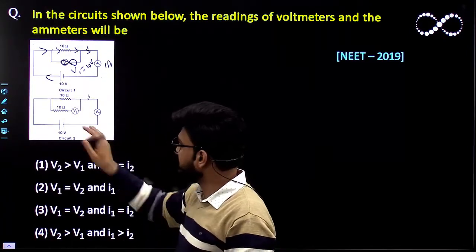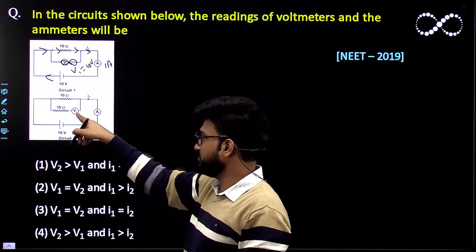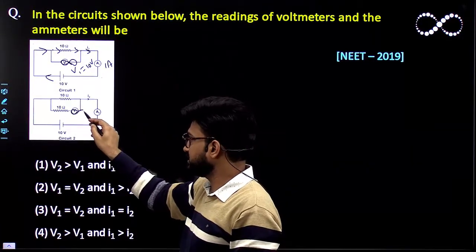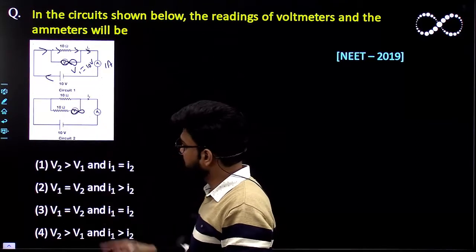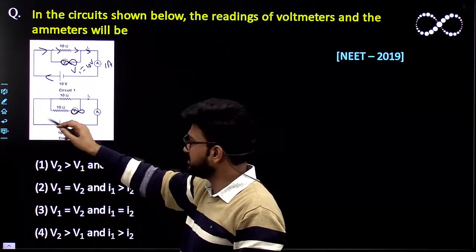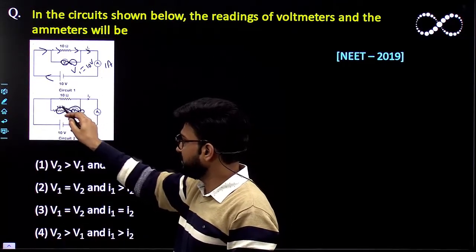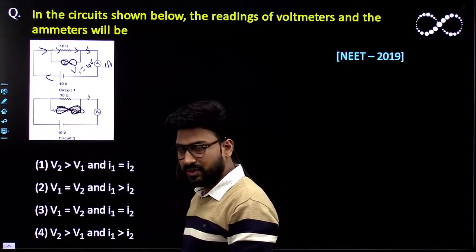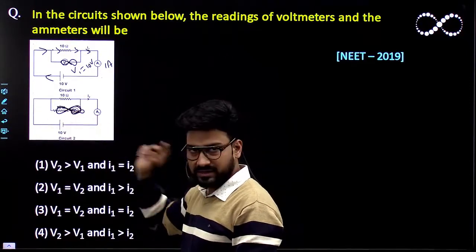And what about the second circuit? In the second circuit this would also have the infinite resistance since it is an ideal. So that means infinite plus 10 ohm resistance. So this would also have infinite resistance only. The effective combination would be infinite only.